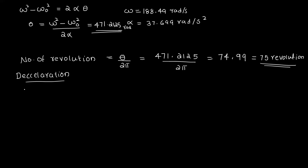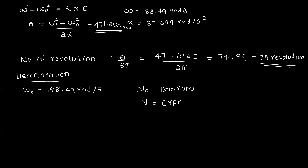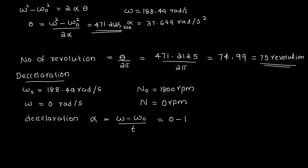For the deceleration phase, the initial angular velocity omega₀ is 188.49 radians per second. The motor comes to a stop, so the final angular velocity is 0 radians per second. The deceleration alpha equals omega minus omega₀ divided by t, which is 0 minus 188.49 divided by t.